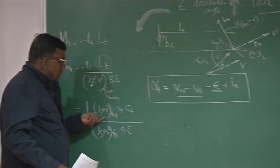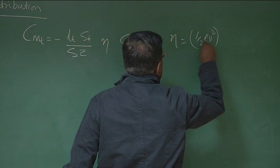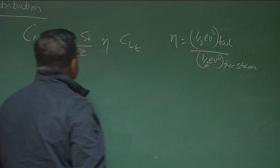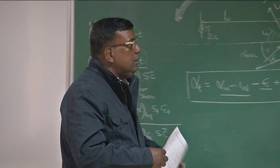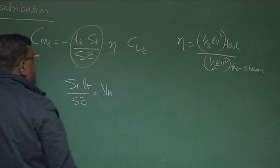What is eta? Eta is the ratio of dynamic pressure at the tail to the free stream dynamic pressure: eta = (half·rho·V²_tail)/(half·rho·V²_freestream). And S_T·l_T/(S·c̄) is a very popular parameter called the tail volume ratio, V_H.